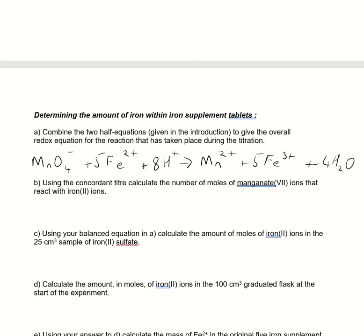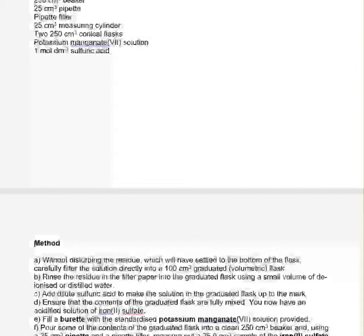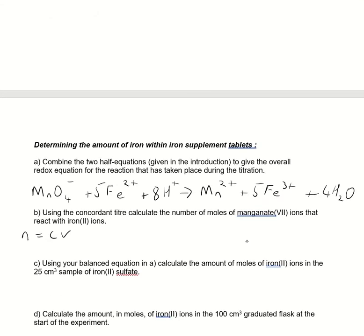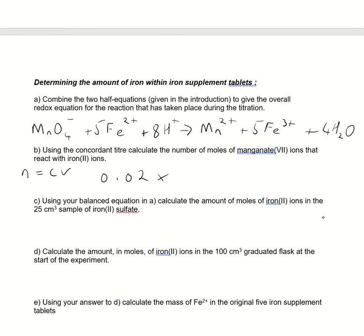Right, so use the concordant titre value to calculate the number of moles of manganate ions reacted. So moles, n equals CV. Concentration, if we scroll back up, we worked out at being 0.02. So if I go down with this, times by, and then the volume, 20.50 over 1,000. So if we get the calculators out for that, 20.5 divided by 1,000 times 0.02, 4.1 times 10 to the minus 4.